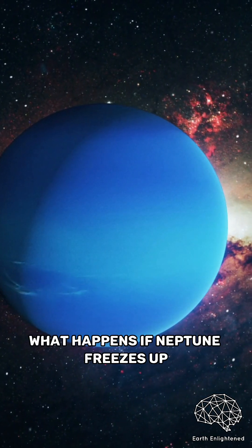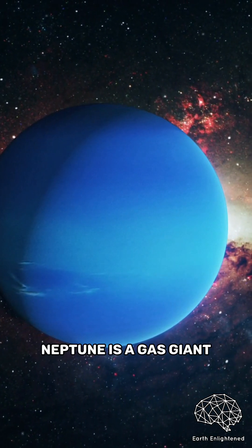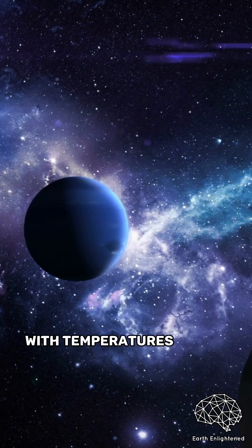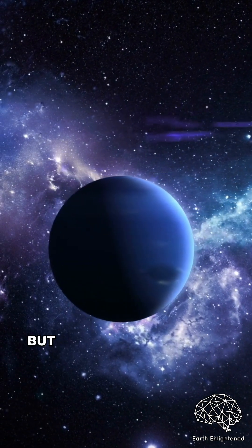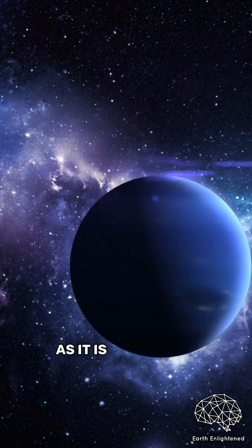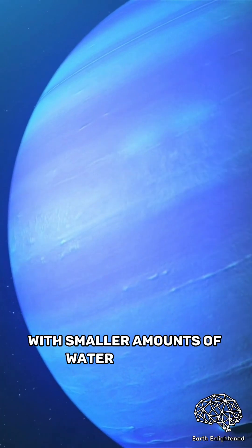What happens if Neptune freezes up? Neptune is a gas giant and the coldest planet, with temperatures as low as minus 370 degrees Fahrenheit. But this doesn't make it a ball of ice, as it is a gas giant with smaller amounts of water and rock.